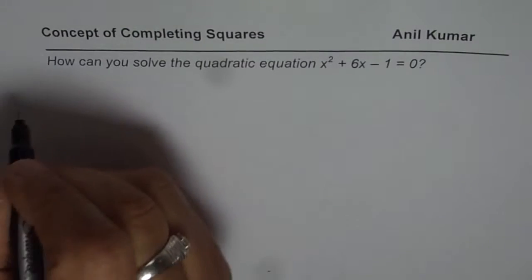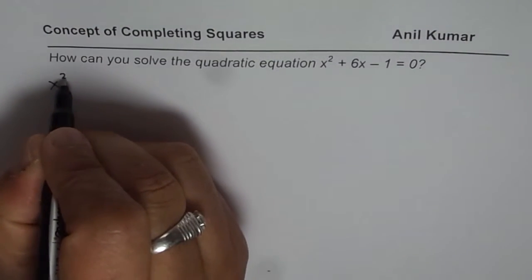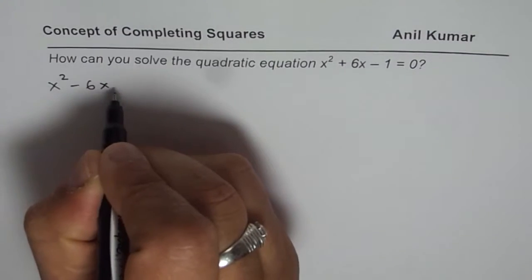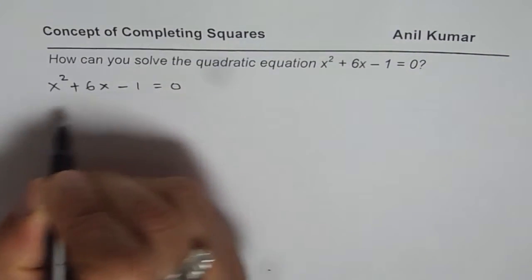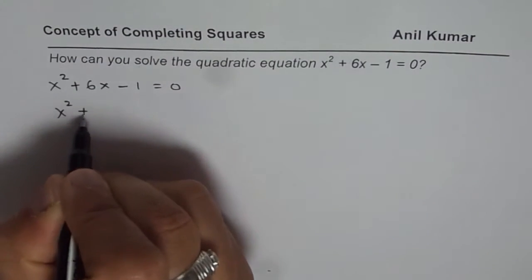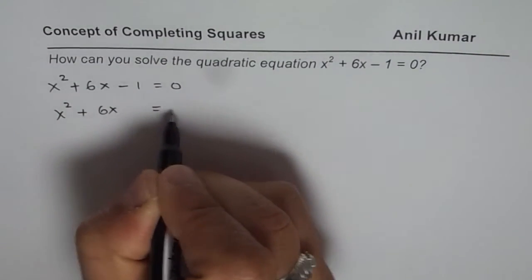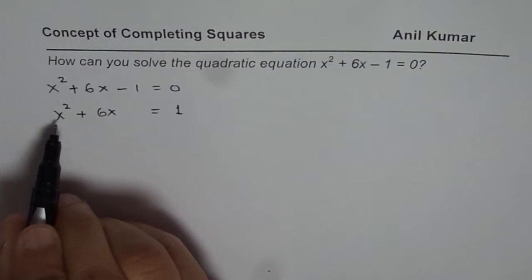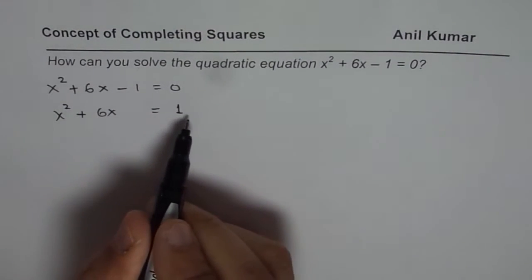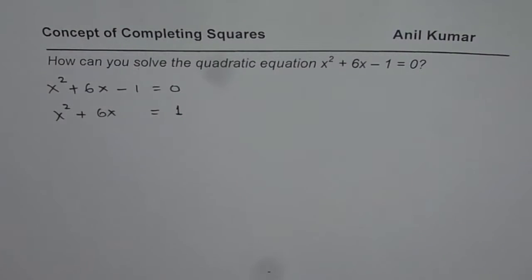Our instincts will tell us that we should keep variables on one side and the constants on the other side. So what we get here is x² + 6x = 1. Now at this stage, we really get stuck. We have x² + 6x = 1. There are two x's and they are of different degrees, so it becomes really difficult for us to solve such an equation.